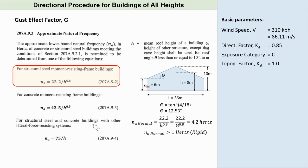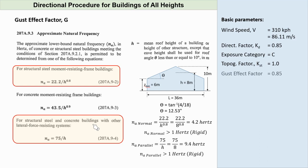For wind direction parallel to ridge, our lateral force-resisting system in this direction will be braced frame. Most likely, the system in this direction is stiffer than the other. Using the formula 75 over H, we will get a value of 9.4 Hz, also greater than 1. The building in this direction can also be considered rigid. In either direction, we can use a gust effect factor of 0.85.